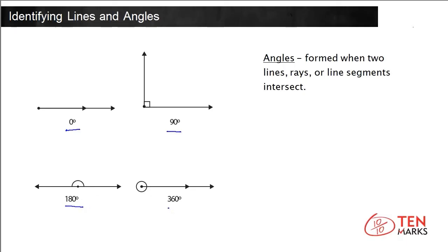360 degrees is when lines are coinciding, called a full turn or complete angle. It brings us back to 0.